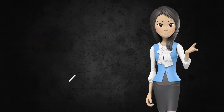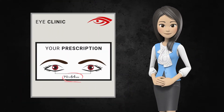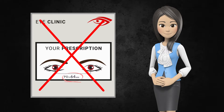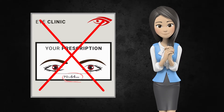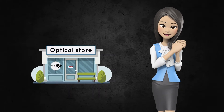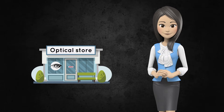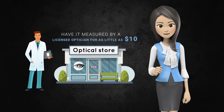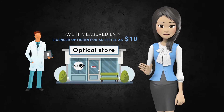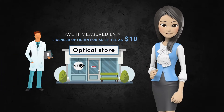You can usually find your pupillary distance on your prescription. If it is missing, or if you do not have a prescription, you can visit any optical store or eye doctor and have it measured by a licensed optician for as little as $10.